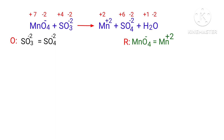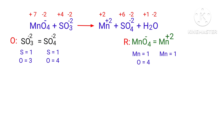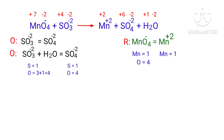Now balance the number of atoms in the two half-reactions. In the oxidation half-reaction, to balance the oxygen atoms you produce water molecules. Then to balance the hydrogen atoms, you produce H⁺ ions.